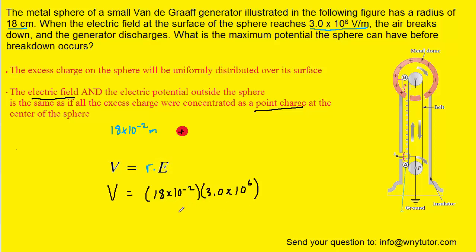And when we simplify that we get approximately 5.4 times 10 to the power of 5. And since this is an electric potential, the unit would be volts. And that is indeed the correct answer.